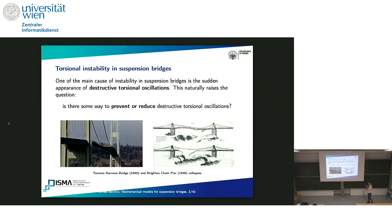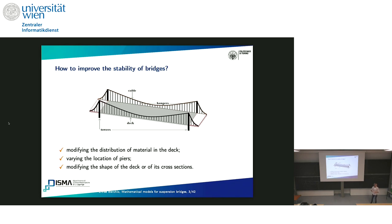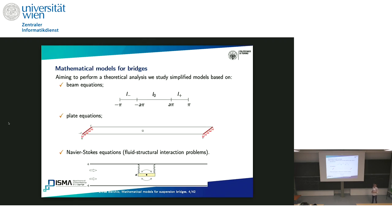It is well known that one of the main causes of instability in this kind of structures is the sudden appearance of destructive torsional oscillations. This is well known since the celebrated Tacoma Narrows bridge collapse. Therefore, one of the main questions about the stability of this structure is: is there some way to prevent or at least reduce the occurrence of these torsional oscillations? Having this goal in mind, one may think to modify the design of these structures in order to improve stability — for instance by modifying the density of the material in the deck, varying the location of piers, or modifying the shape of the deck or its cross section.